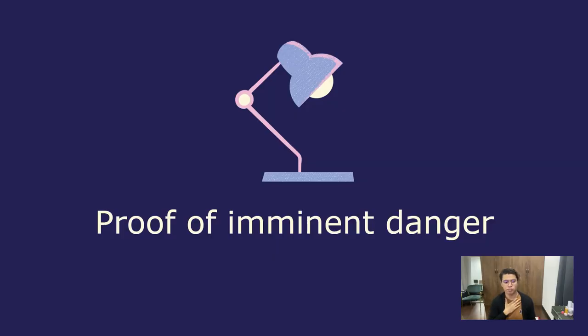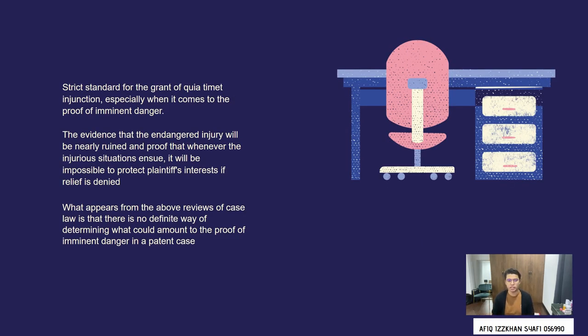There are two elements required in order to establish a quia timet action: the proof of imminent danger and the proof of substantial apprehended damages. Regarding the proof of imminent danger, this goes back to 1884 when equity courts laid down a strict standard. The evidence must show that the injury will be nearly certain, and that whenever the injurious situation ensues, it will be impossible to protect the plaintiff's interest if relief is denied.